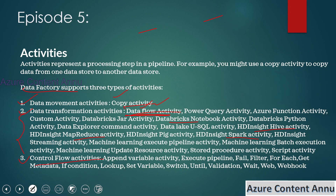Then there are control flow activities, which we will use most often. These activities help provide logic into the pipeline — for example, append variable, execute pipeline, for-each activity, if condition, and switch activity. All these are called control flow activities, which help control the workflow of the pipeline. In total, we have around 40 activities, and we will see their functionalities in detail in upcoming videos.